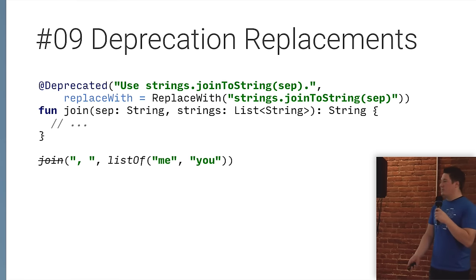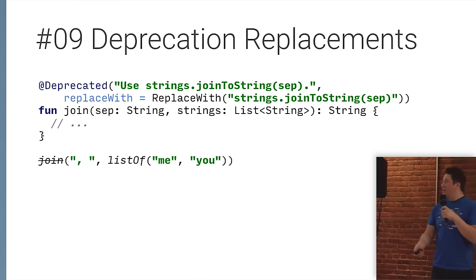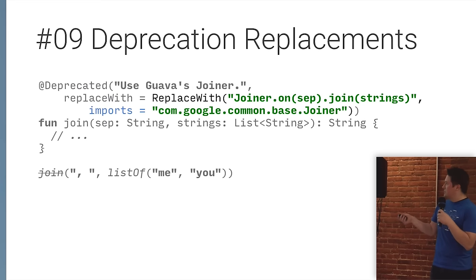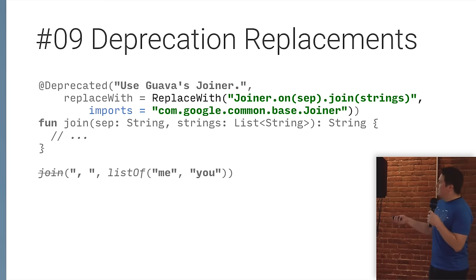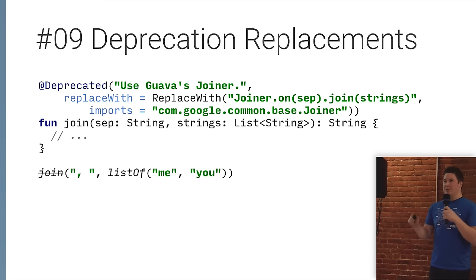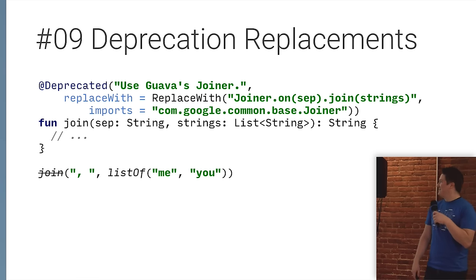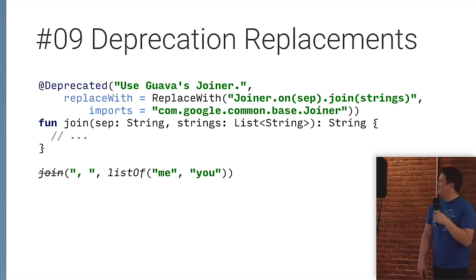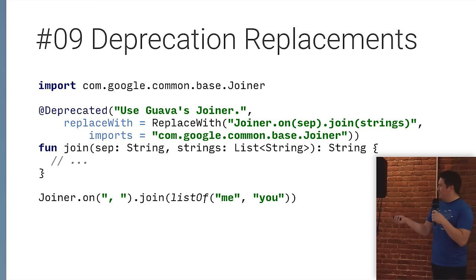Another cool feature with deprecation replacements is that you can include imports alongside the replacement. For example, if you want to switch users to Guava's Joiner which requires an import, you specify the import in the replacement. When someone triggers the intention action, it does the replacement, retains the arguments, puts them in the correct spots, and automatically adds the import for you.